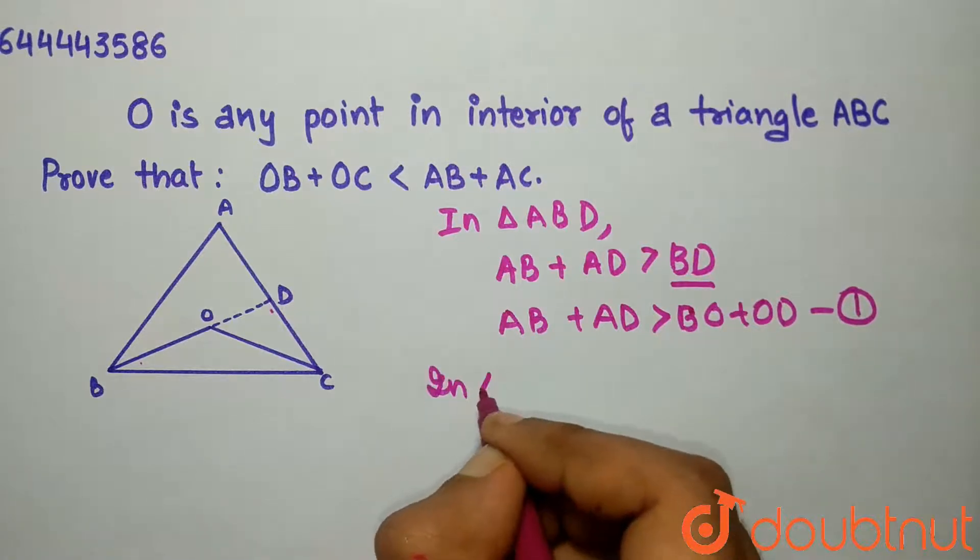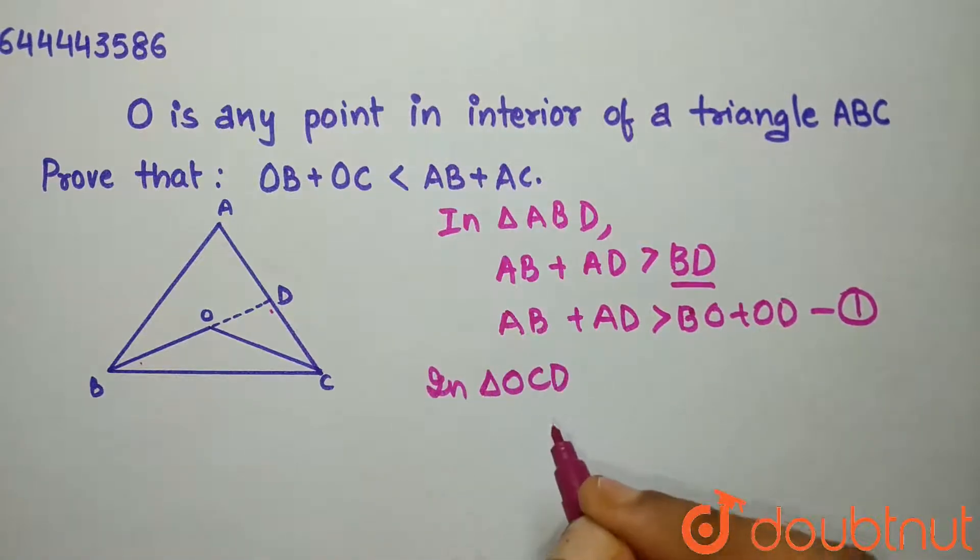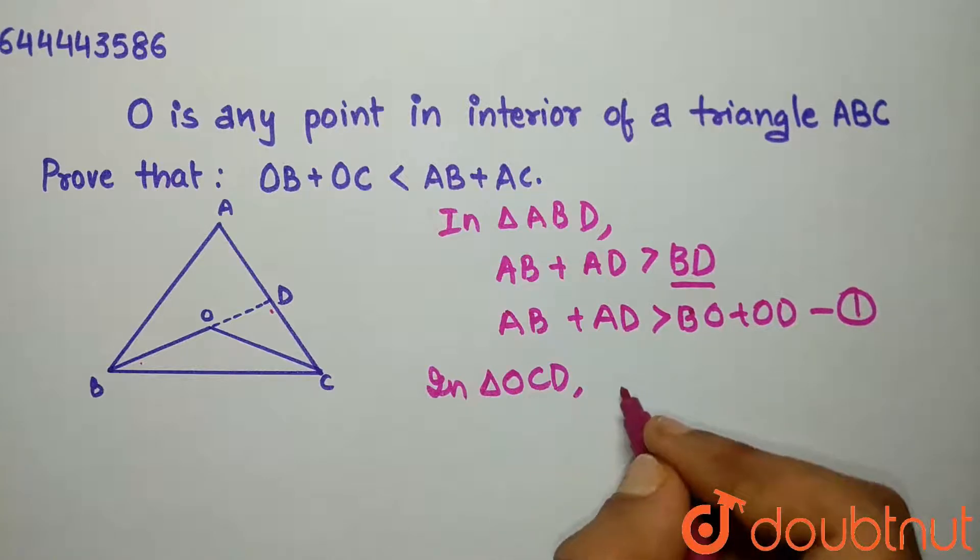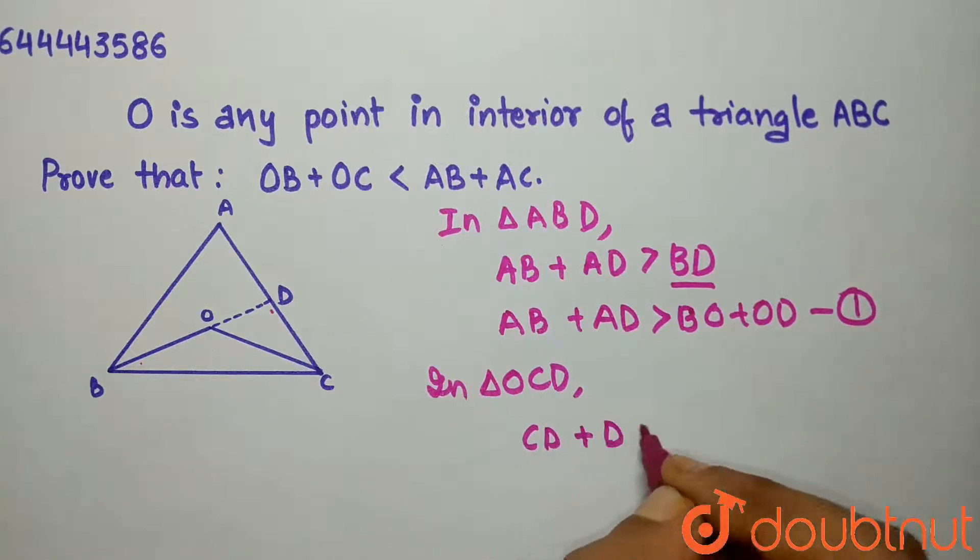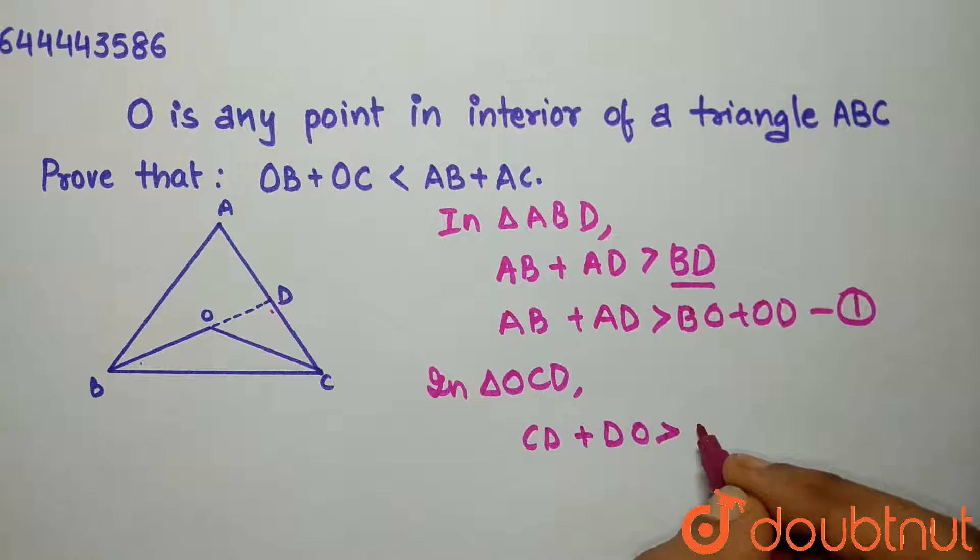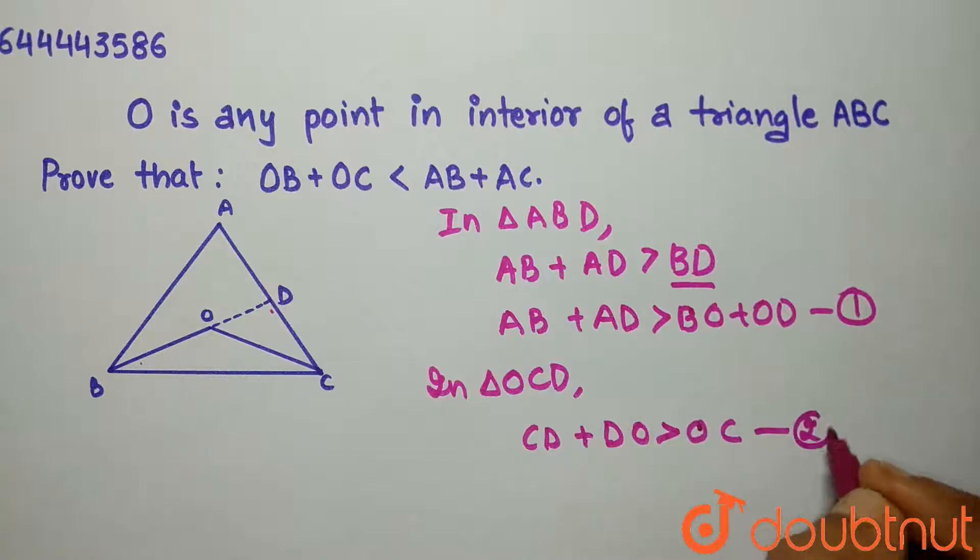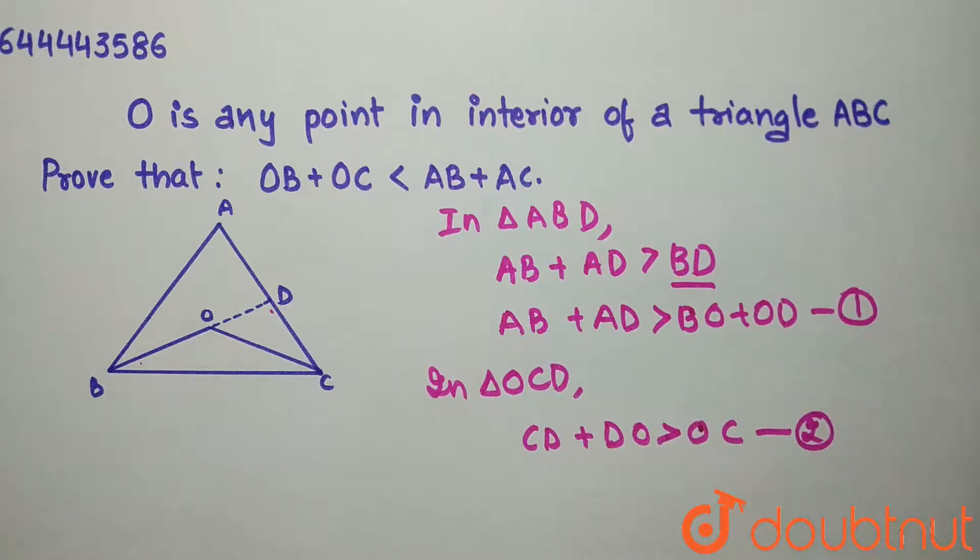Now, in triangle OCD, CD plus OD must be greater than OC. Let this be equation 2.